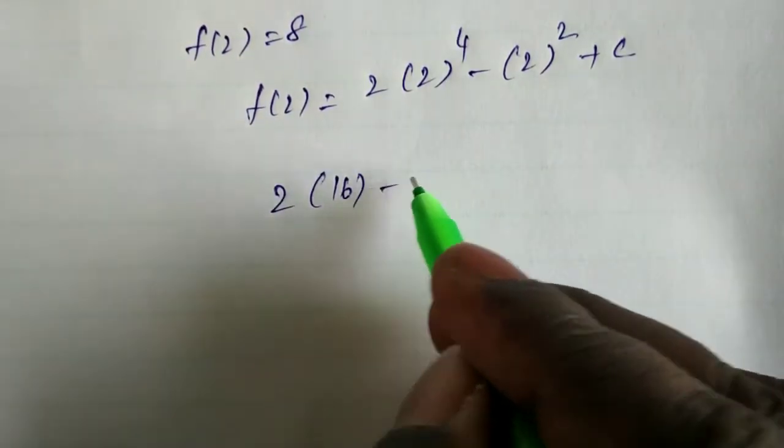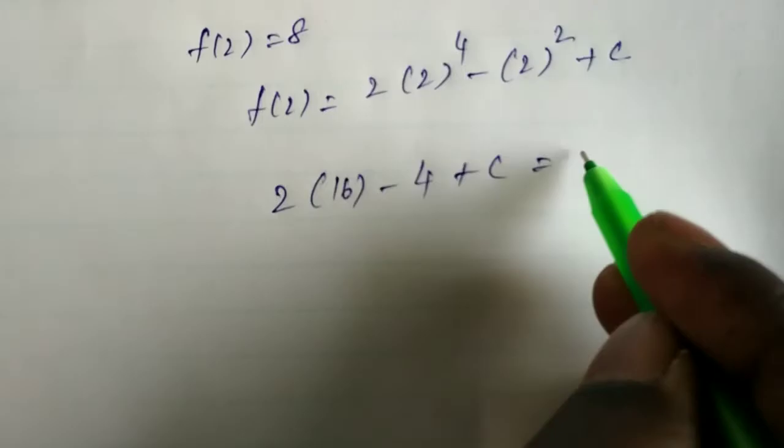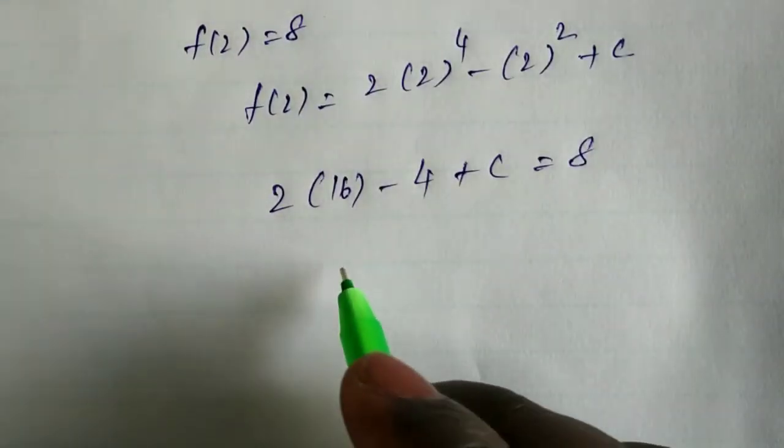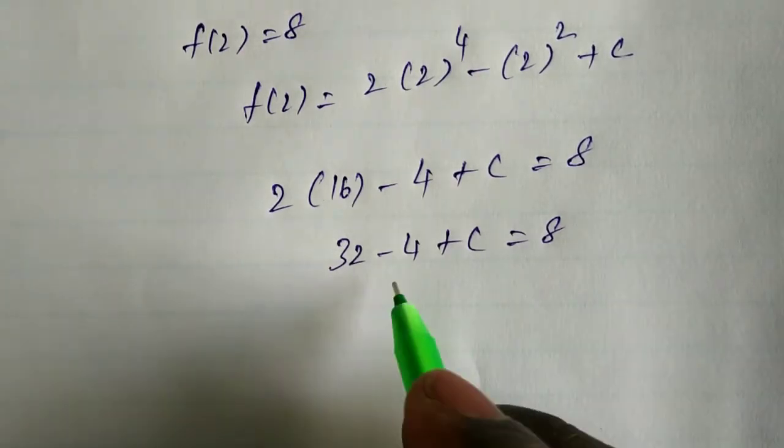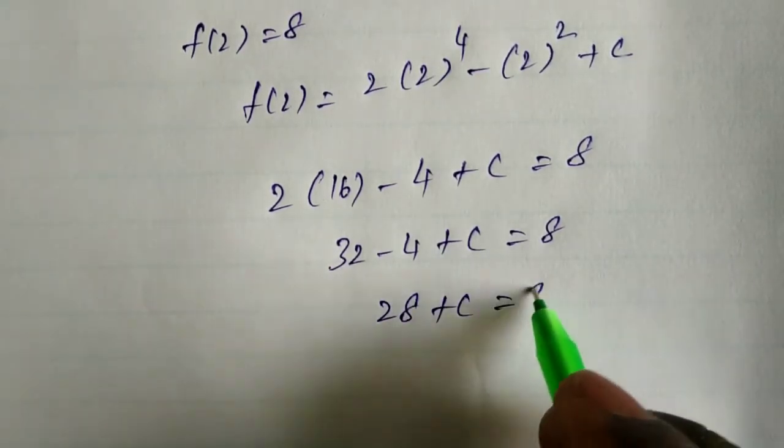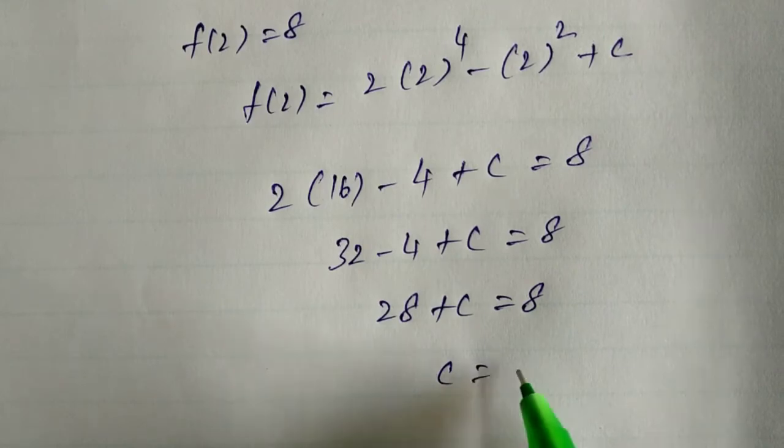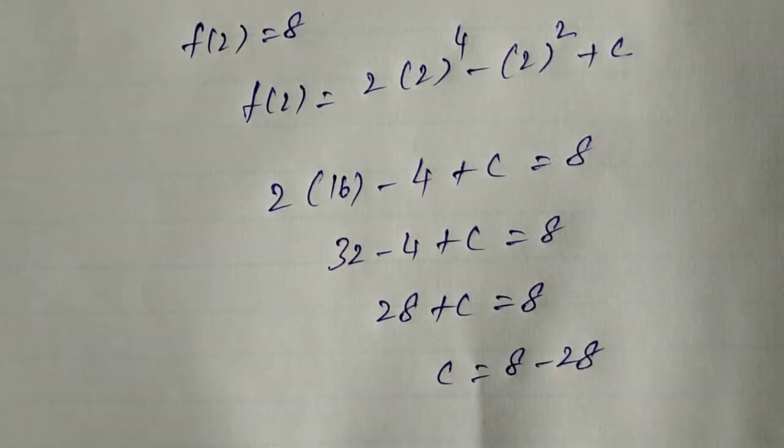This gives us 2(16) - 4 + C = 8, so 32 - 4 + C = 8, which means 28 + C = 8. Therefore C = 8 - 28.